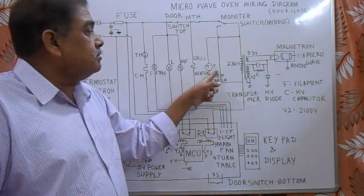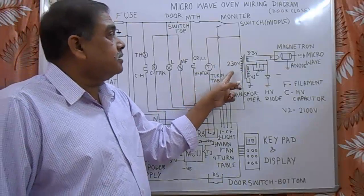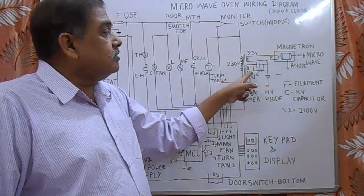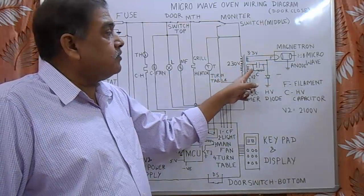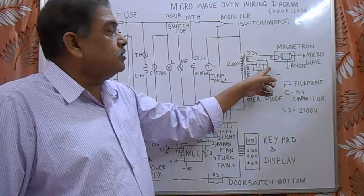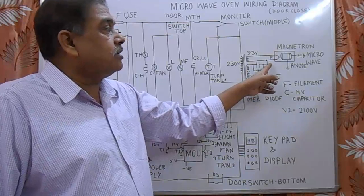It is turntable motor. It is main microwave transformer. Microwave transformer produces 3.3 volt supply for filament and 2100 volt supply for this rectifier and condenser. It produces 4200 volt negative supply to the cathode and anode is connected to the earth.